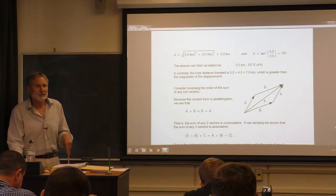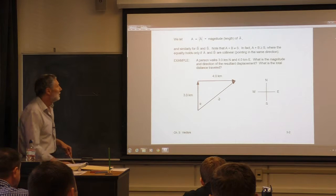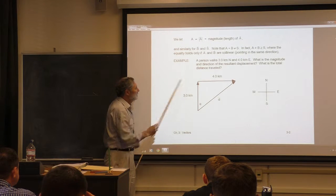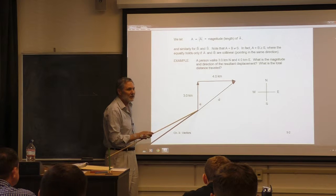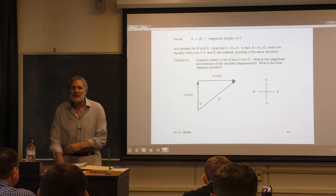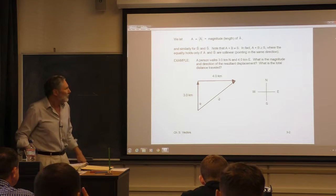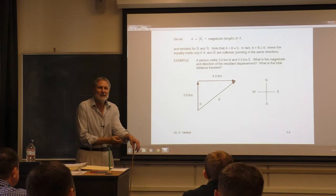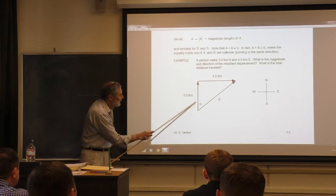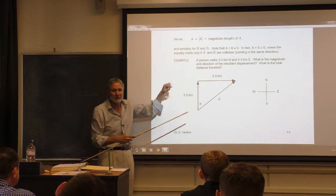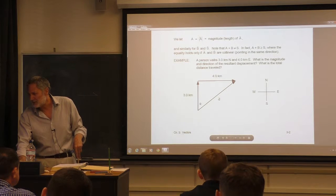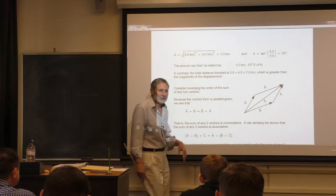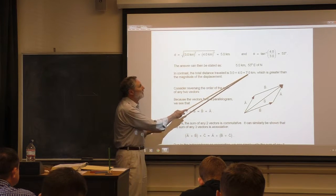What's the total distance traveled by the person? It's not zero. The person starts here and ends here. You have to add up all the little distances along the path. That's the actual distance you would measure if you were walking along. So it's seven kilometers — three plus four — which is greater than the displacement magnitude of five kilometers.